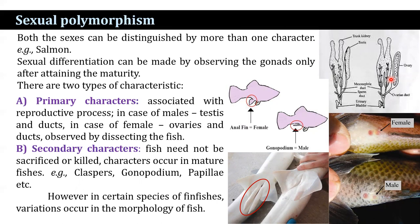Secondary characters: the fish need not be sacrificed or killed, and these characters occur in mature fishes. For example, there is the pelvic clasper, and in some fishes, the gonopodium — found in the male.